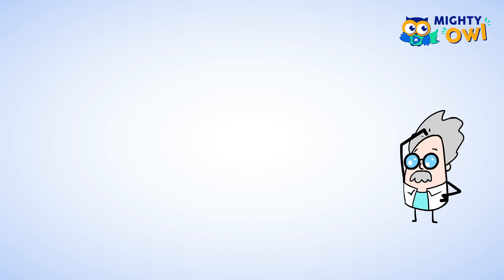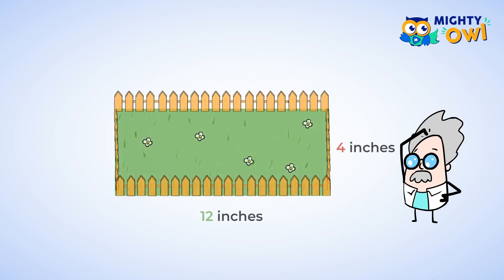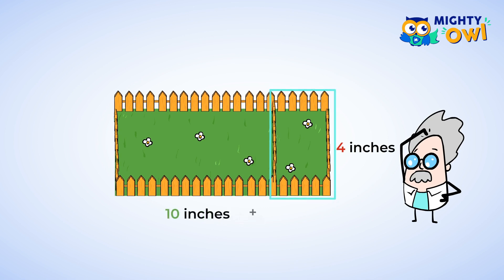First, let's look at an example of using the distributive property to find the area of a smaller rectangle. The length is 12 inches and the width is 4 inches. Now you may know your multiples of 12, and that's wonderful if you do. But I want to show you how you can break up a larger number to make finding the area even easier. I'm going to break up 12 into 10 plus 2. Look at how we now have two rectangles, and we can find the area of each and then add them together.